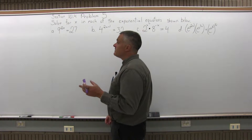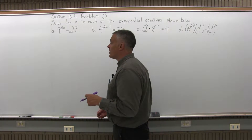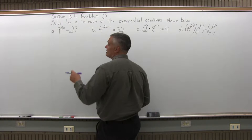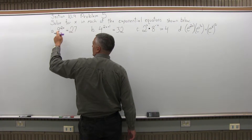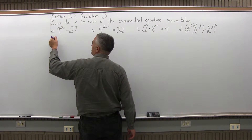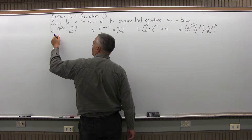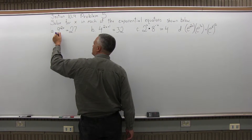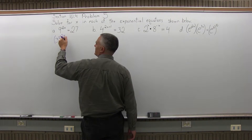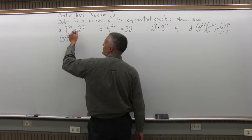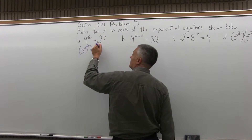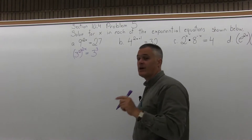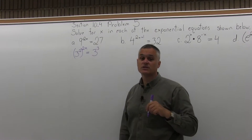Part A: the equation is 9 to the 2x power equals 27. Step one is make the base the same on both sides. So instead of 9 to the 2x, write 9 as 3 to the second power, to the 2x. And 27 is 3 to the third power — you can verify that: 3 times 3 times 3 is 27.